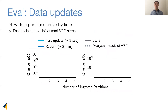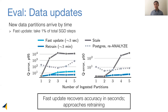A natural question to ask is: once a NeuroCard estimator has been constructed, what happens if new data comes in? We test this scenario by ingesting new data partitions by time, focusing on the update strategy FastUpdate, which only takes about 1% of the total original gradient descent steps. FastUpdate can recover accuracy quite efficiently in a few seconds, and moreover it approaches the accuracy of complete retraining. So FastUpdate is a practical, effective strategy to deal with new data.